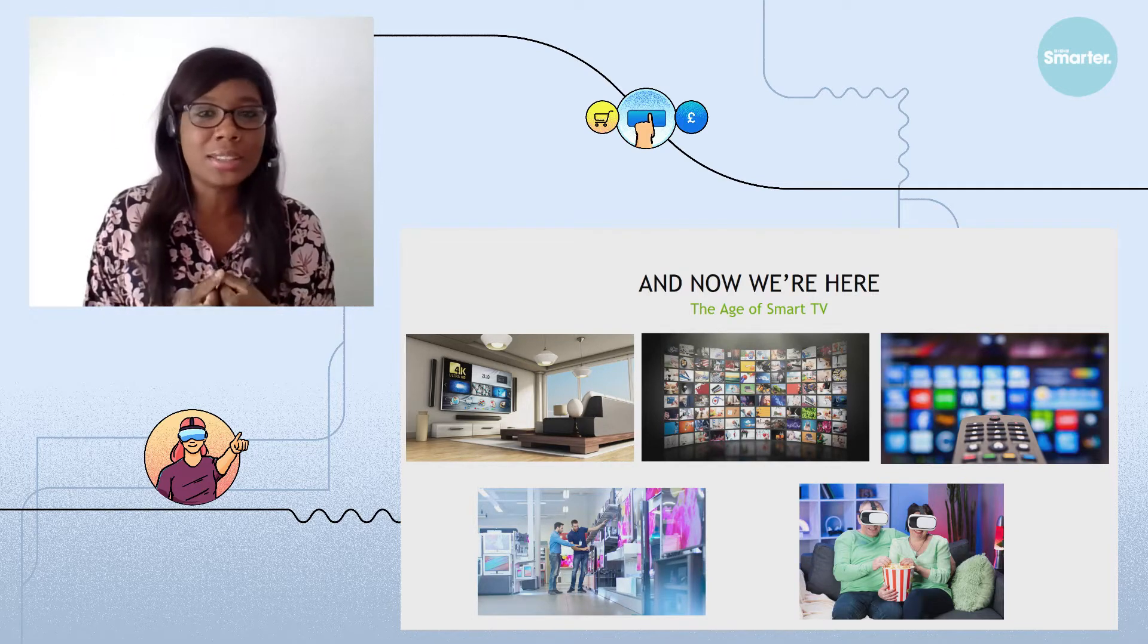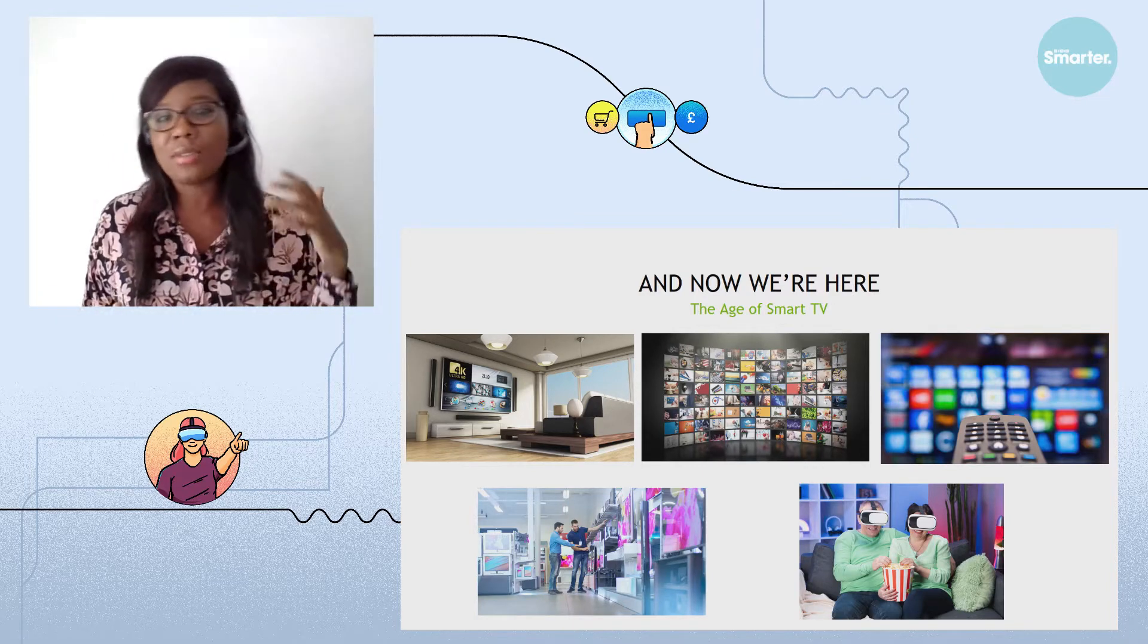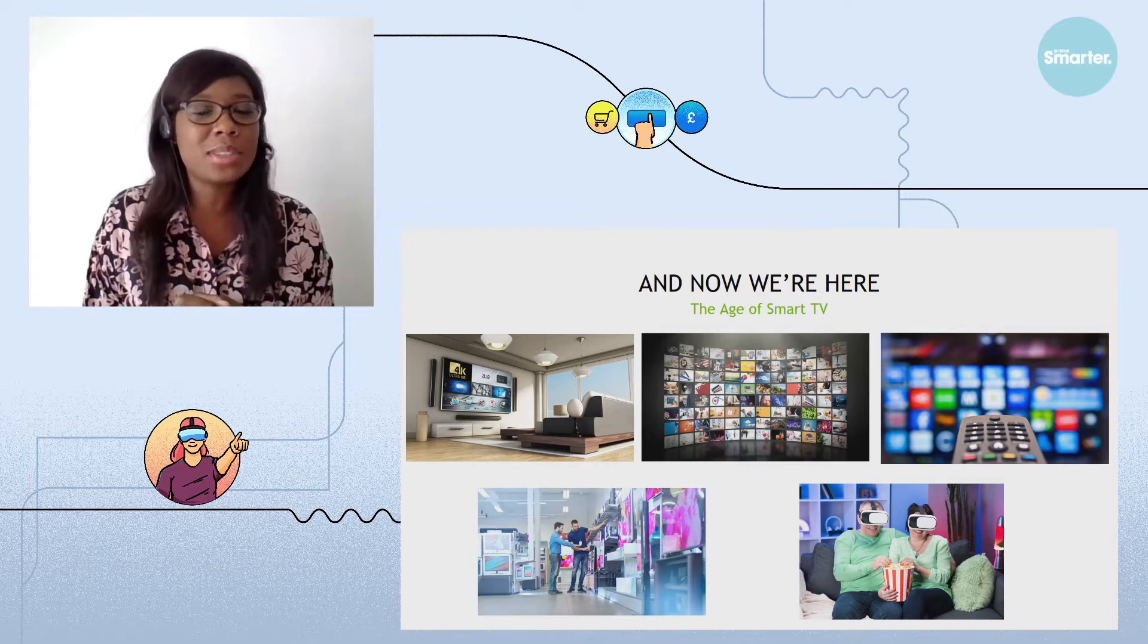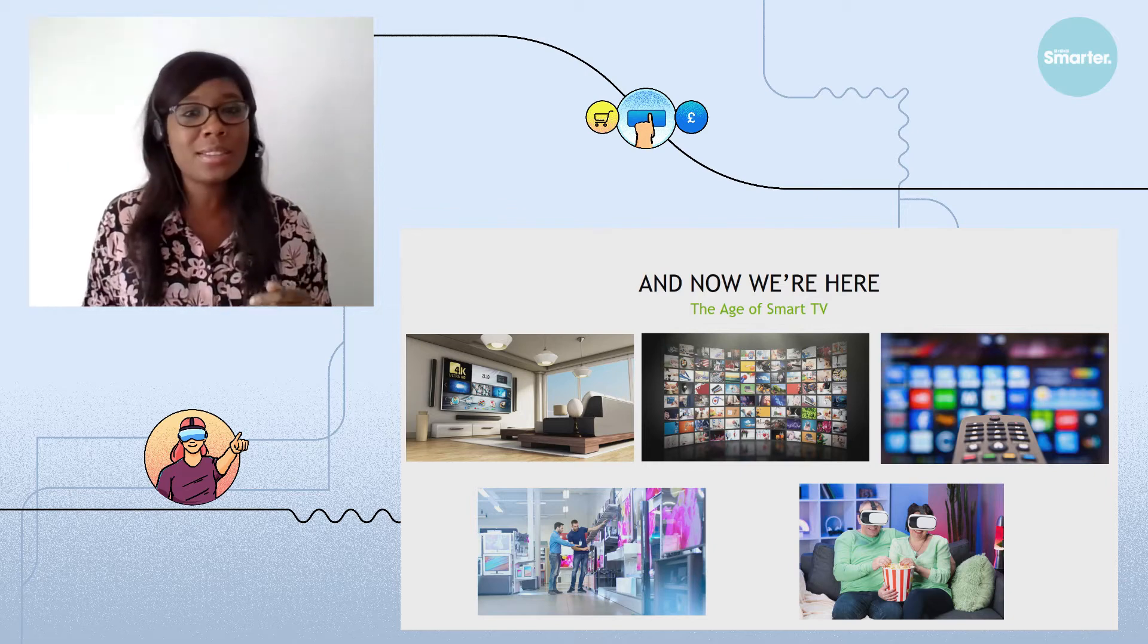So today, 27 million households in the UK have access to TV. We have access to hundreds of channels, even foreign channels. And the TV runs 24-7 without interruption. So how did we actually get from transistorized TV to the age of smart TV?